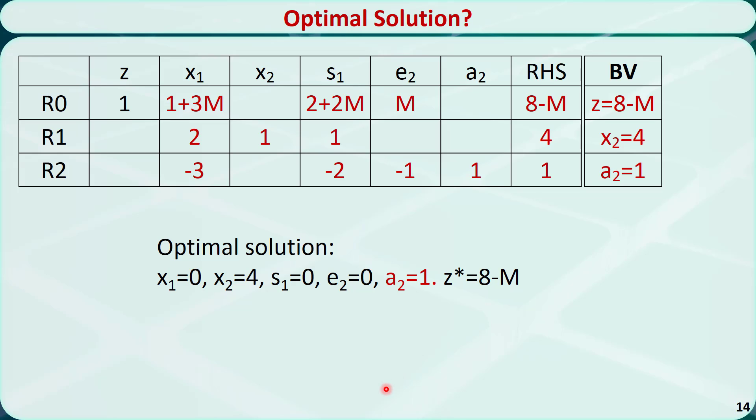That is how to use the Big M method to solve linear programming problems with equality constraints or greater than or equal to constraints. Thanks for watching.